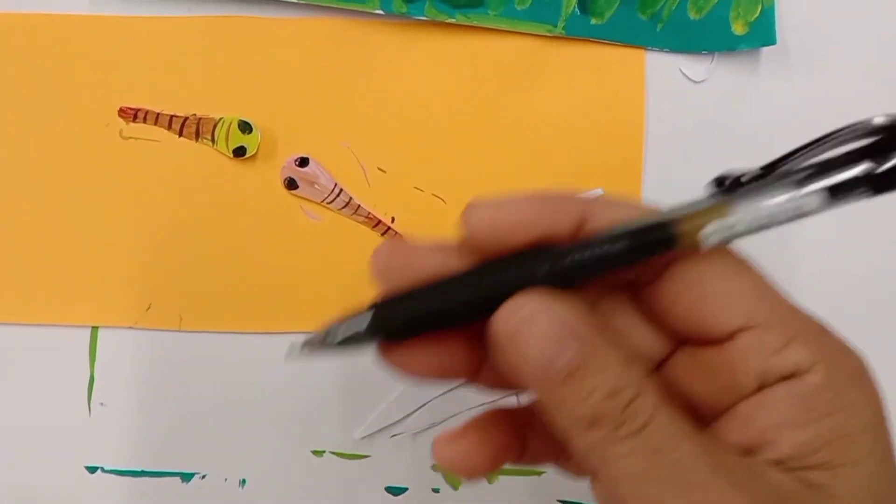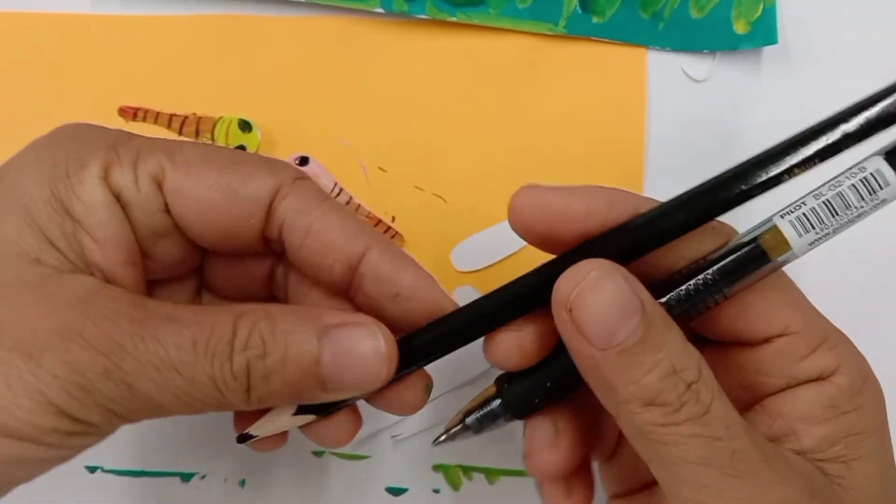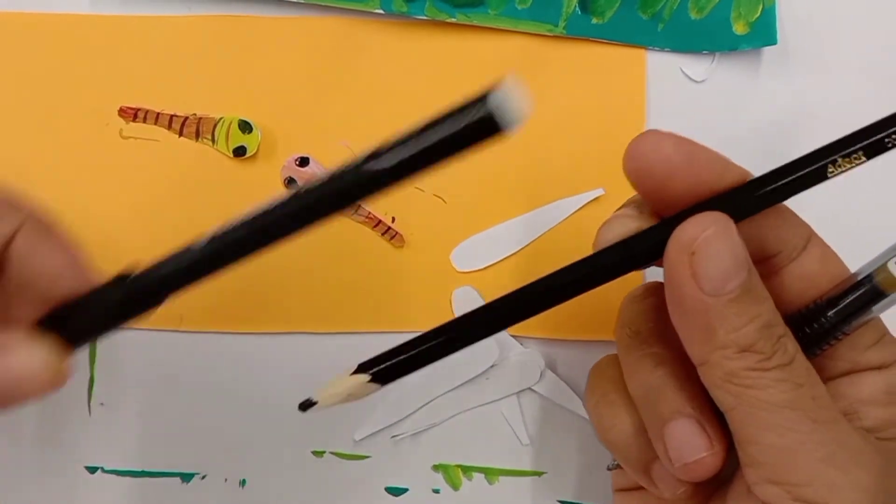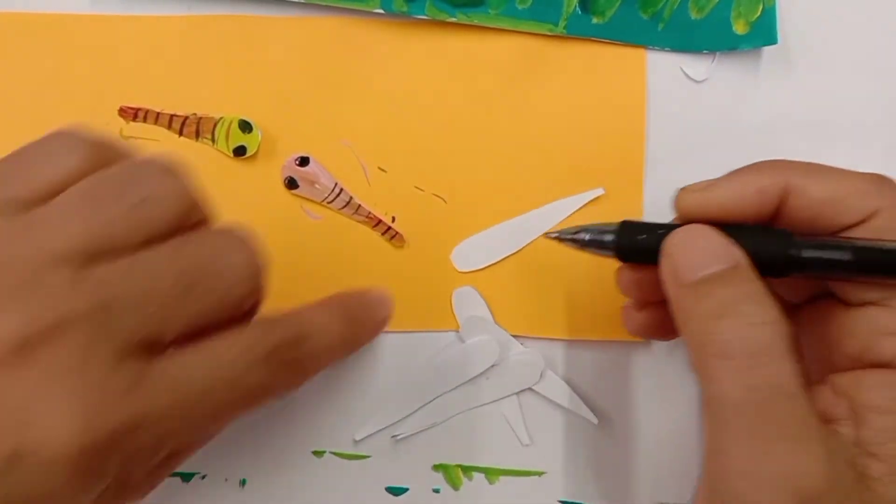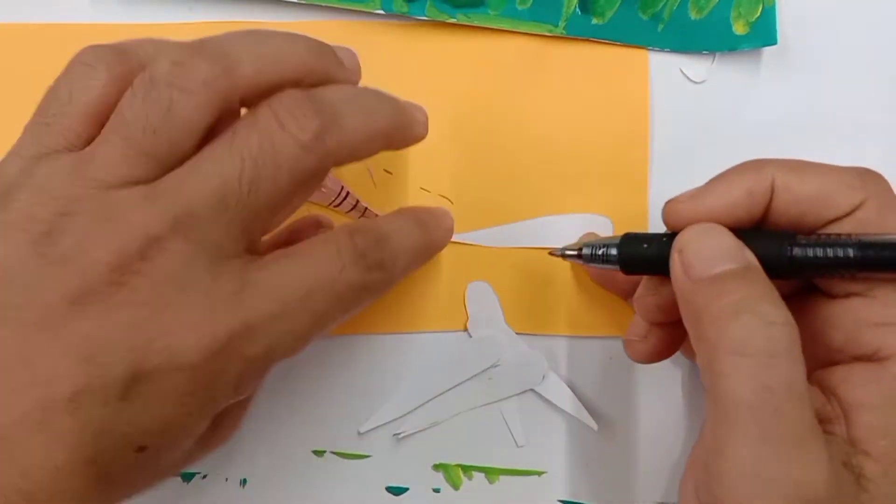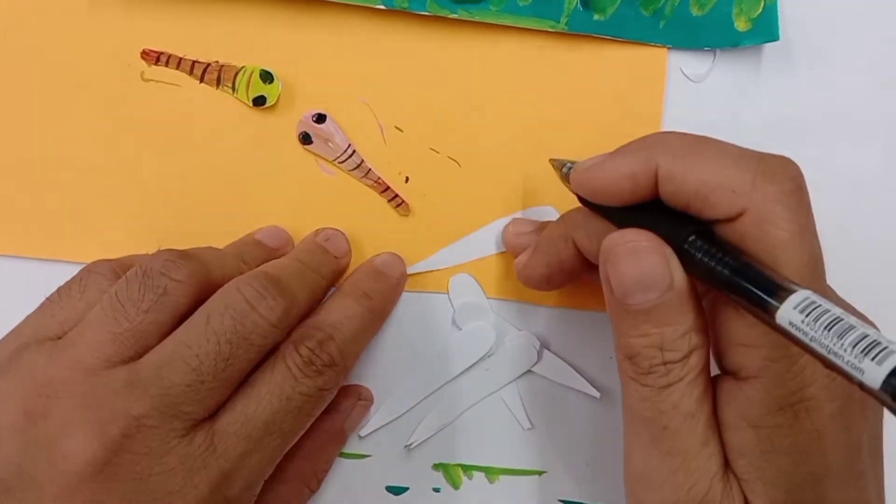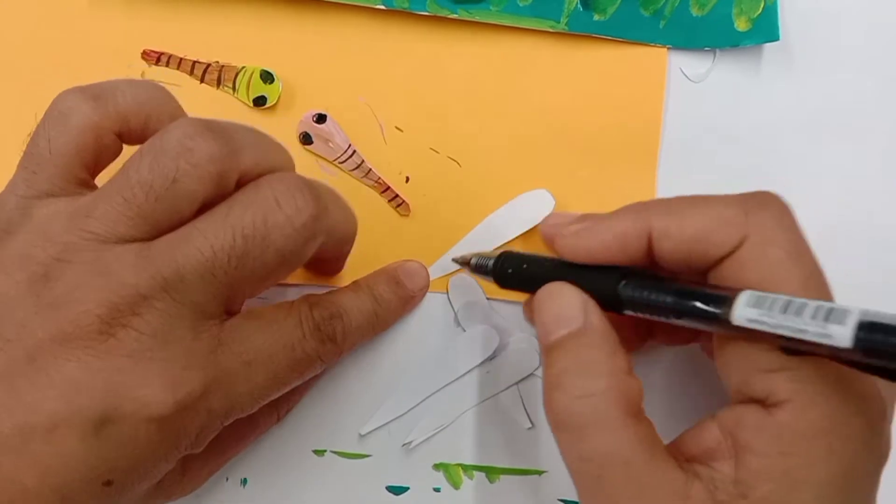You can use a pen, you can use a black colored pencil, or you can use a marker. It's up to you class. But mine, I will use the pen here so that it will be very thin. So you do like this here.